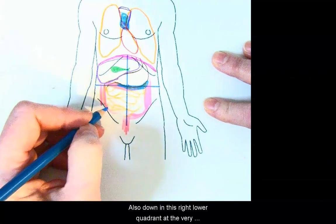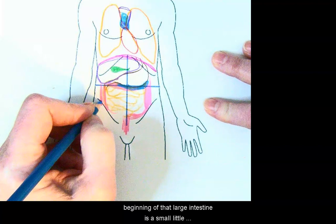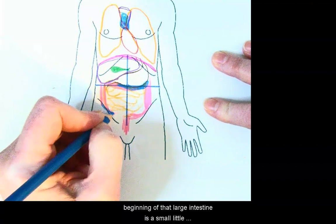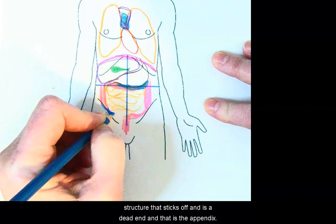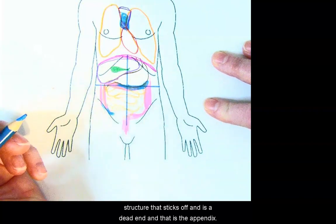Also down in this right lower quadrant, at the very beginning of that large intestine is a small little structure that sticks off and is a dead end, and that is the appendix.